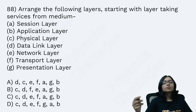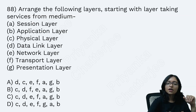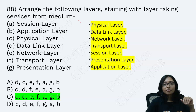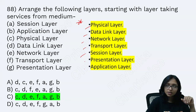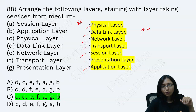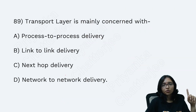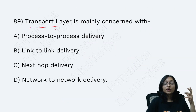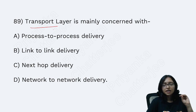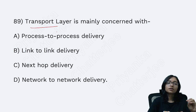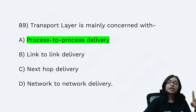The OSI model layer sequence — a very popular sequence question — is: Physical, Data Link, Network, Transport, Session, Presentation, Application. Prepare the main functionalities of each layer in a quick revision notebook. The Transport layer provides process-to-process delivery, and the Data Link layer unit is called a frame.